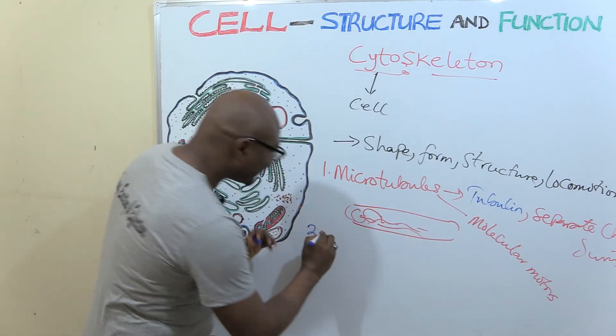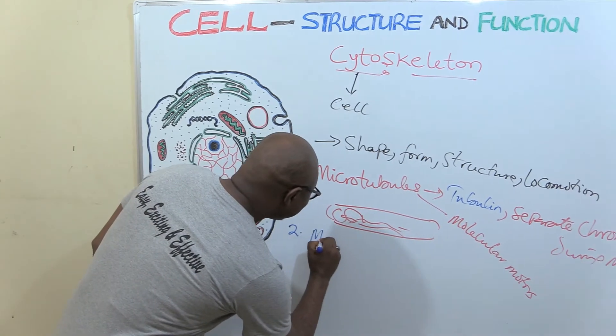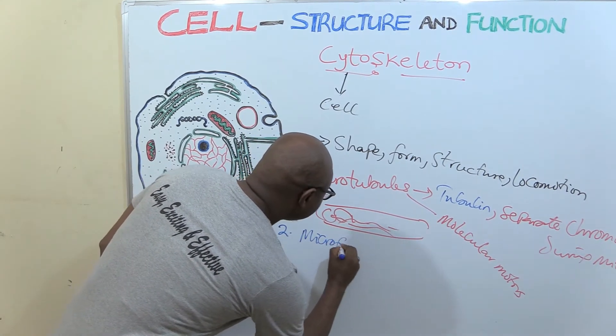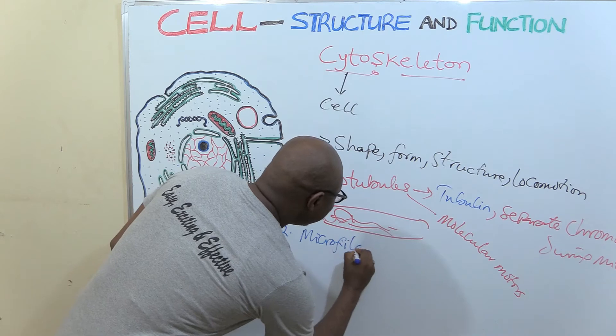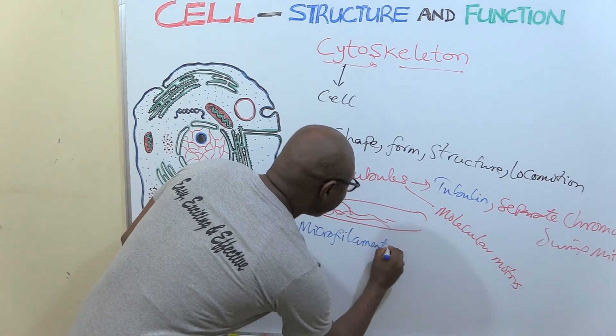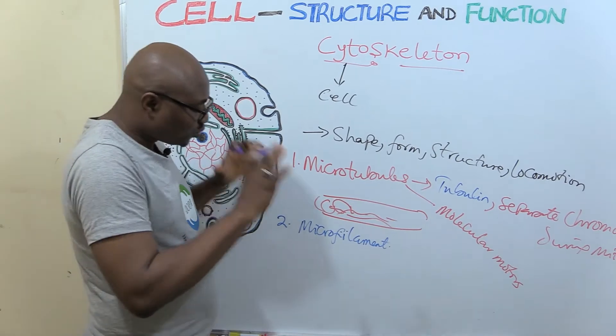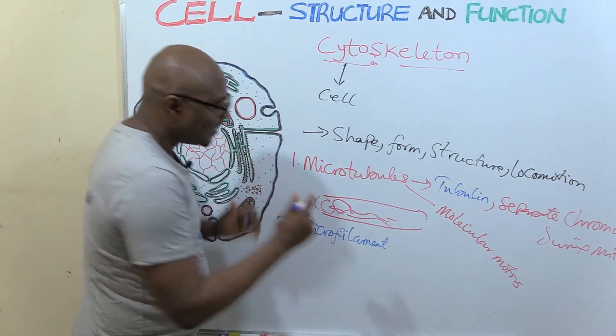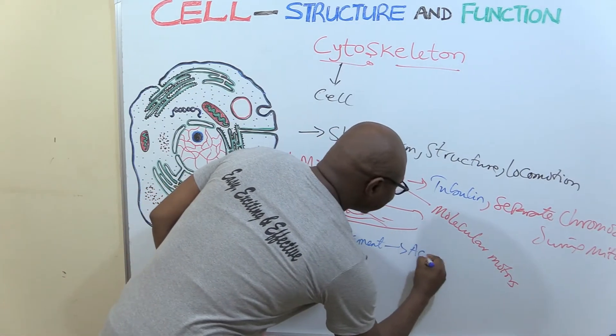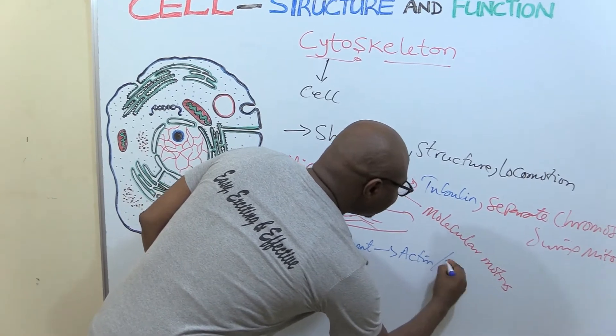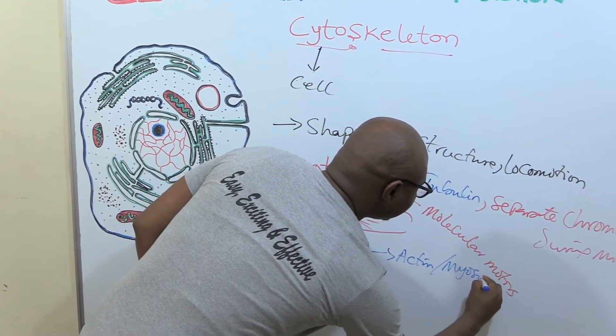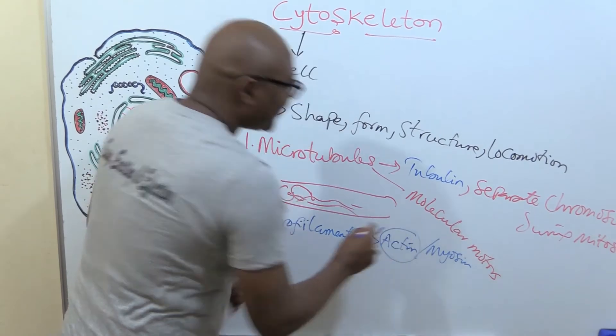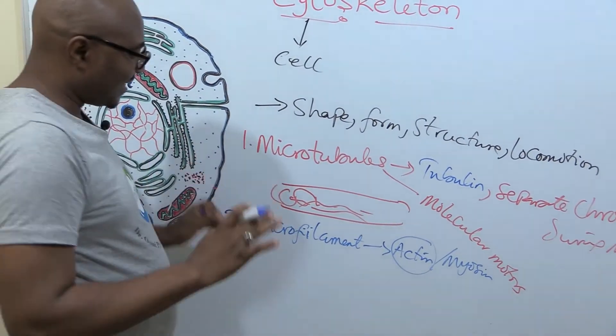So the second one is known as the microfilament. This microfilament is made up of two major types of proteins. One of them is called actin, and the other one, myosin. But actin is far more abundant.